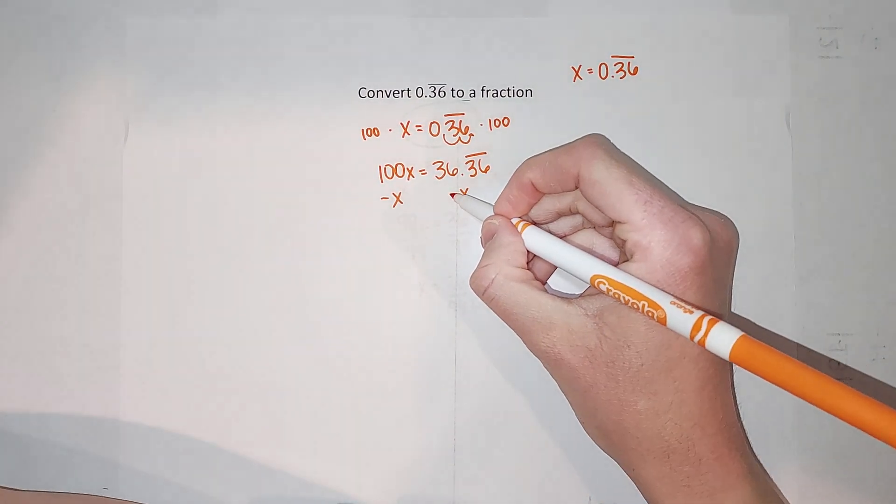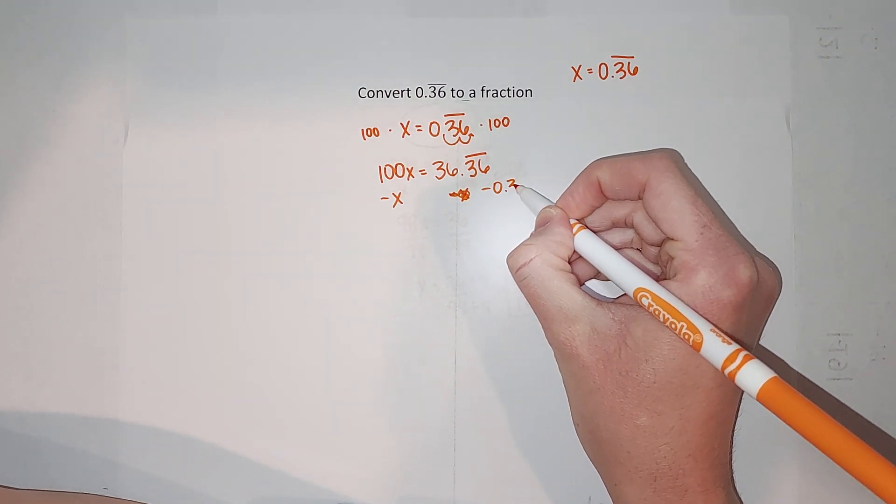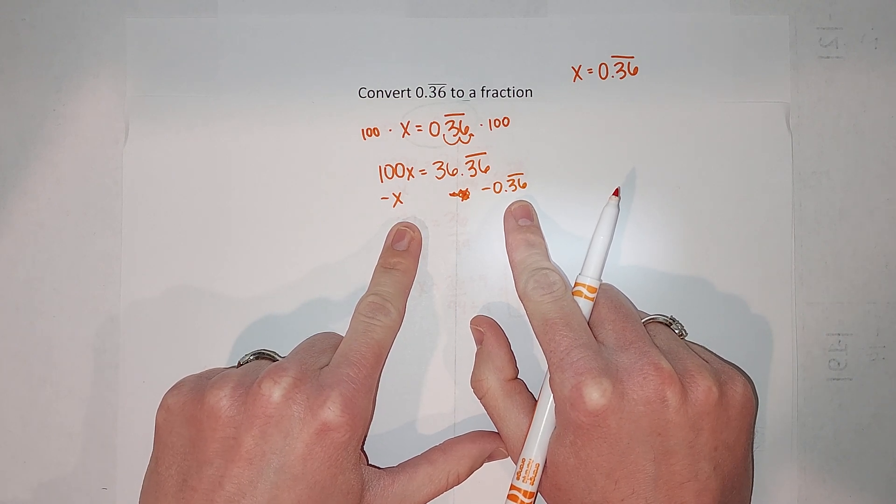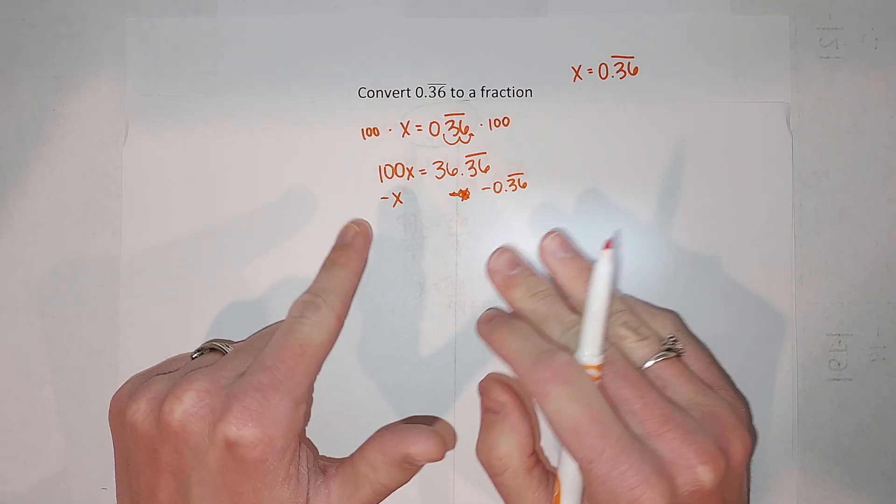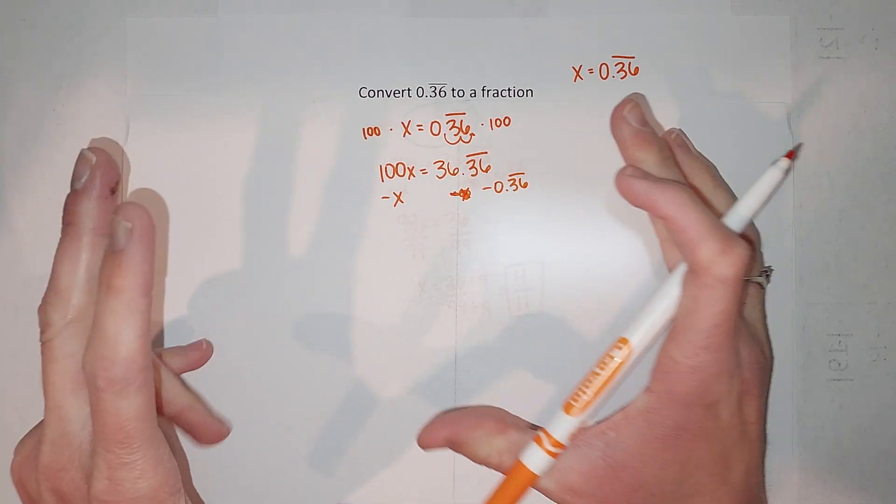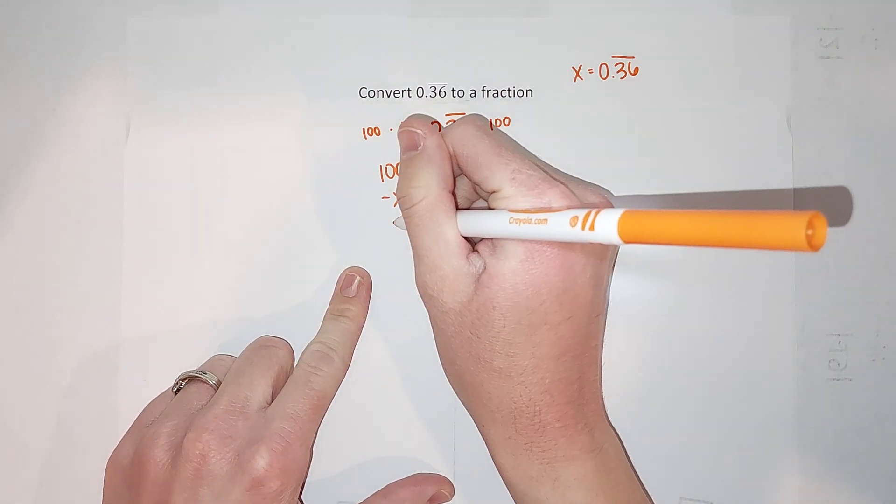I'm subtracting the same thing from both sides; they just look a little different, but they are equal to each other. So 100x minus x gives me 99x, equals... This takes away my repeating, right? Oh my gosh, you're like, oh, it's actually working.